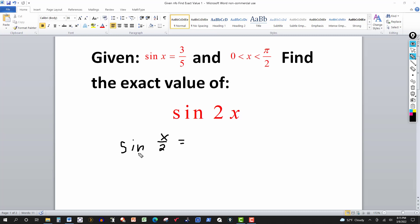And the half angle formula for sine of x over 2 is the square root of 1 minus cosine of the angle, in this case x, over 2. Normally it would be plus or minus, but since we know that the angle x over 2 is in quadrant 1, this will be positive.